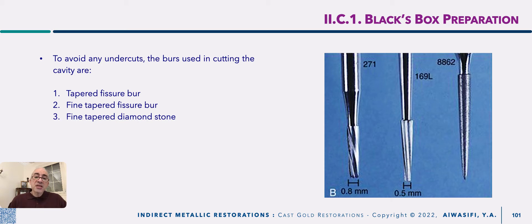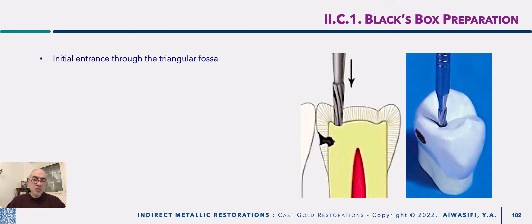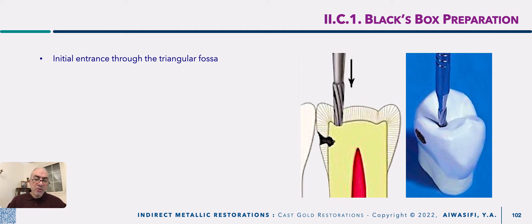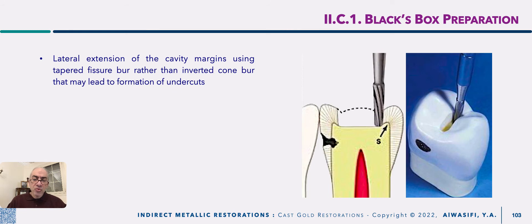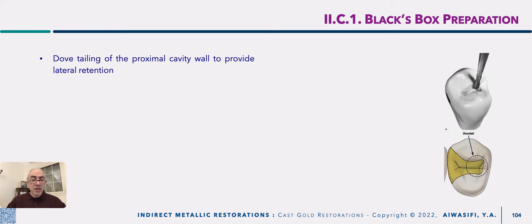We don't use any inverted cone bur as it will surely create undercuts that will need to be corrected by a fissure bur, which means that you will extra-widen your cavity to correct these undercuts. Initial entrance as usual from any weak point — if it is not carious, if it is not opened by itself by the region or by the destruction, you will get initial entrance from a weak point which is a central fossa, or in our case as this premolar has a triangular fossa. Lateral extension is as usual to include all pits and fissures.